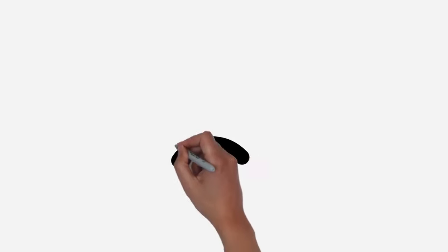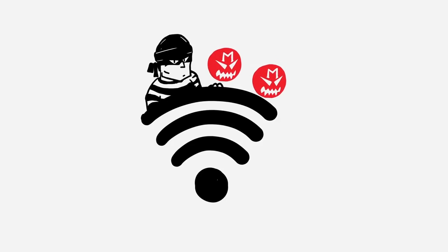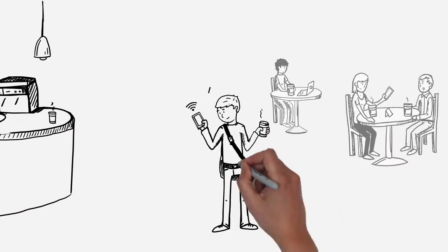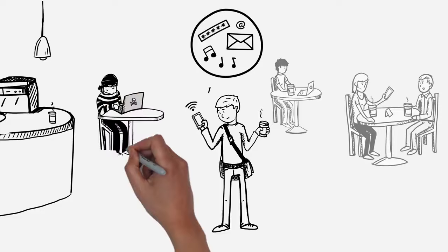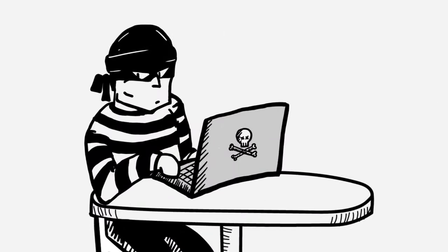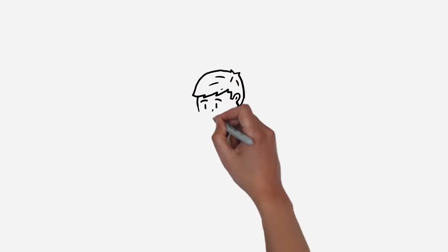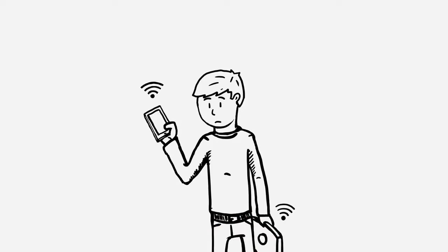However, there are many security dangers that lurk on public Wi-Fi networks. Data sent through public Wi-Fi networks can easily be intercepted by cybercriminals. If you use public Wi-Fi, your personal data could be at risk.